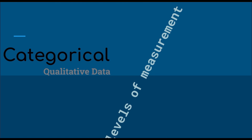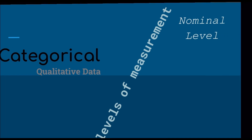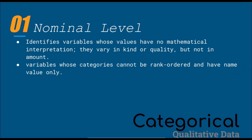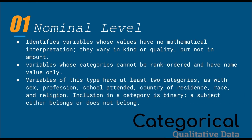In categorical data, the first level is the nominal level. The nominal level is defined as variables whose values have no mathematical interpretation — they vary in kind or quality but not in amount. Their categories cannot be rank ordered and have name values only. Variables of this type have at least two categories, such as sex, proposition, school attendance, country, president, race, and religion. Inclusion in a category is binary — a subject either belongs or does not belong.